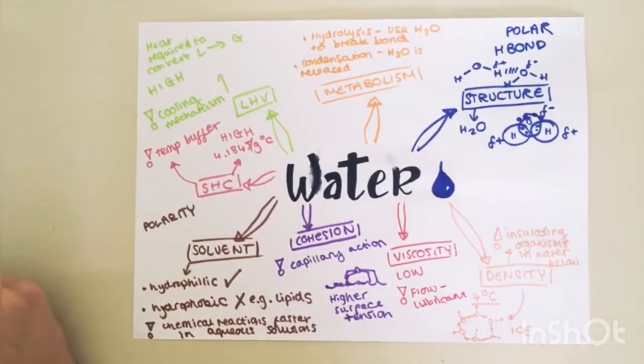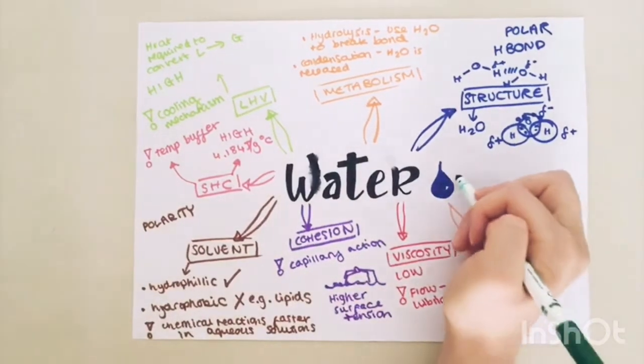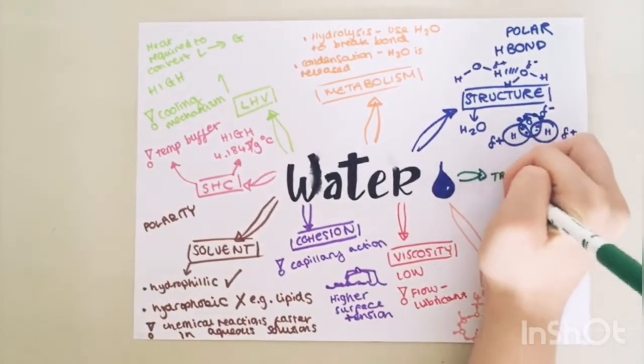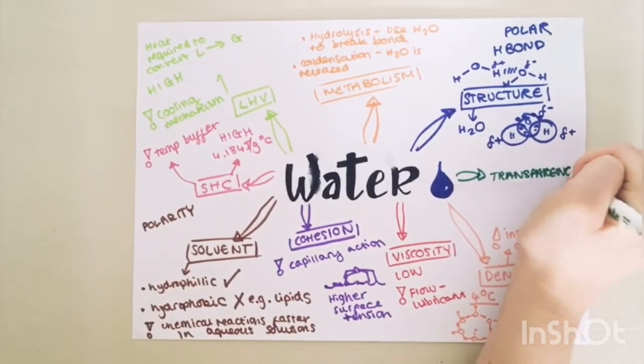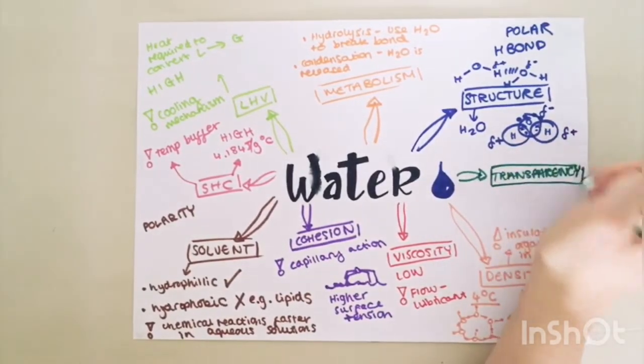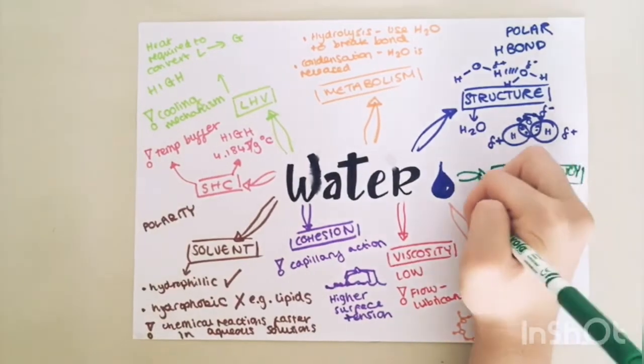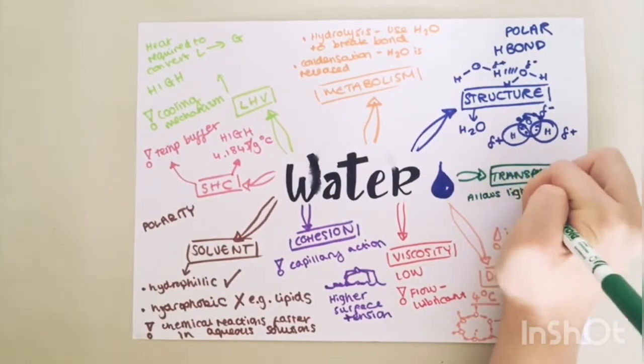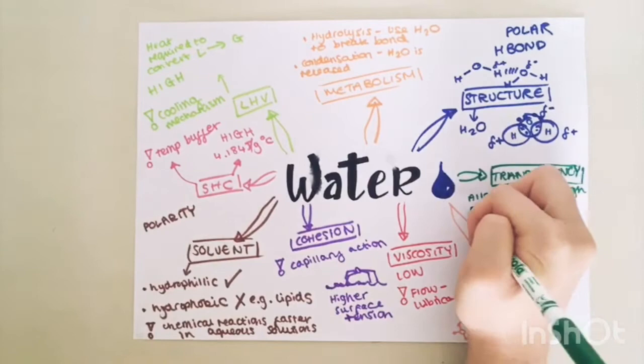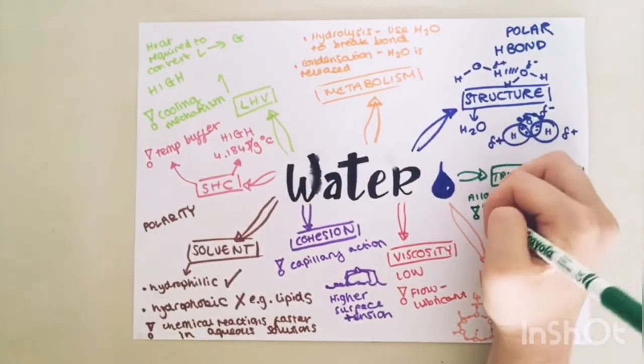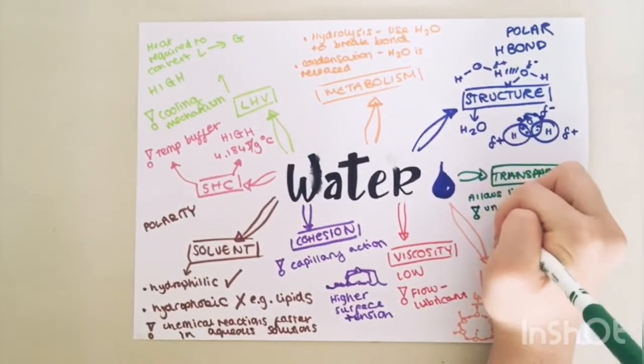The last property of water we're going to talk about today is its transparency. Transparency basically means that it allows light to pass through. The biological importance of this is that underwater plants can photosynthesize.